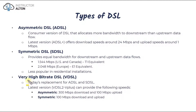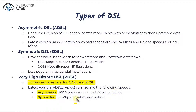Very high bit rate DSL, or VDSL, is the modern replacement for ADSL and SDSL, offering much higher speeds. VDSL can offer either an asymmetric or symmetric option. The VDSL2 V-plus version offers 300 megabits per second download and 100 megabits per second upload in the asymmetric option, and 100 megabits per second for both download and upload in the symmetric option — a drastic improvement over the older versions. VDSL is more common, though ADSL is still around as it's much cheaper.